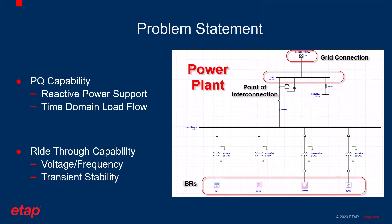In terms of the problem statement, as part of the grid code requirements, power plants are usually mandated to support a certain level of reactive power with respect to their active power levels and the voltage level at the point of interconnection. This study is usually done in time domain load flow analysis.